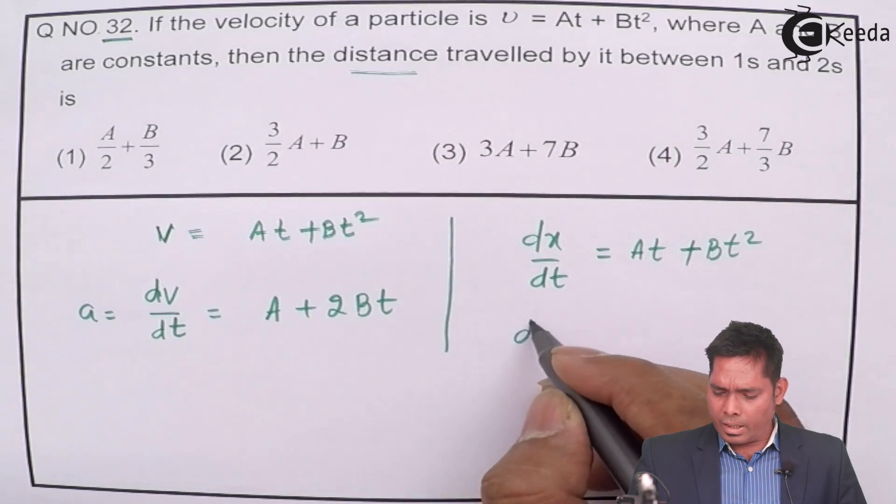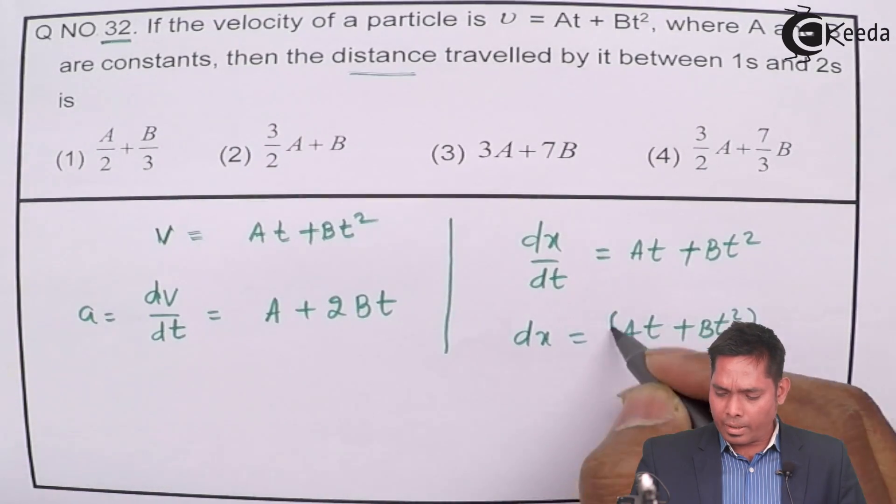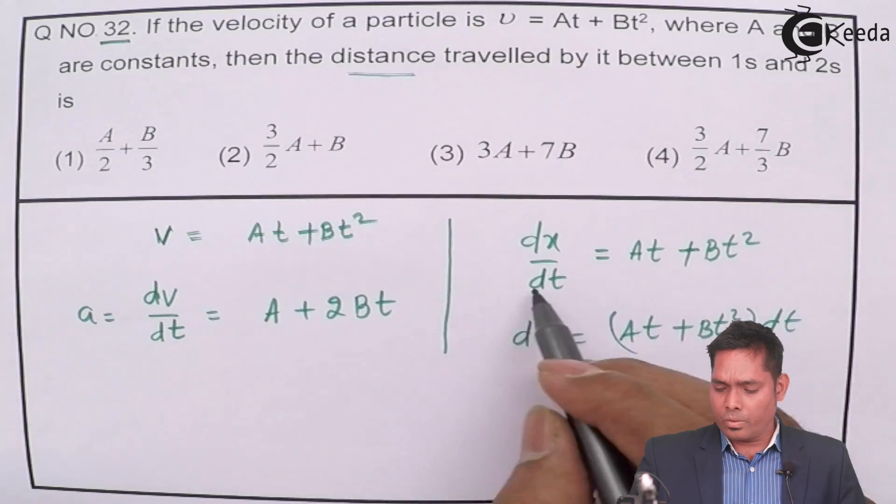From here, dx will be AT plus BT square bracket dt.